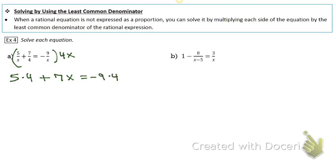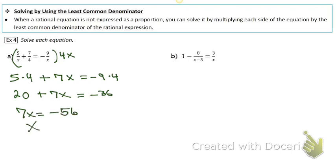In the third fraction the x will cancel. Then you just do the required multiplication, solve the equation, and check your answer by making sure 8 is allowed in the denominator — and it is.